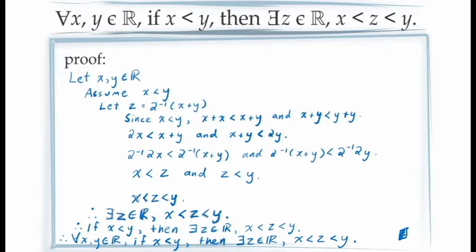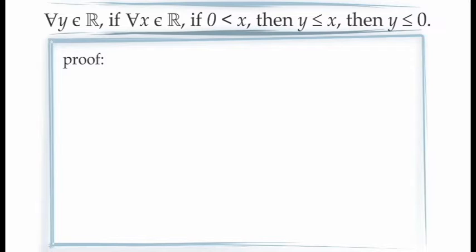Continuing with that, let's prove a statement that looks really complicated. We're going to prove: for all values of y in the real numbers, if for all values of x in the real numbers, if x is greater than 0, then y is less than or equal to x, then y is less than or equal to 0.